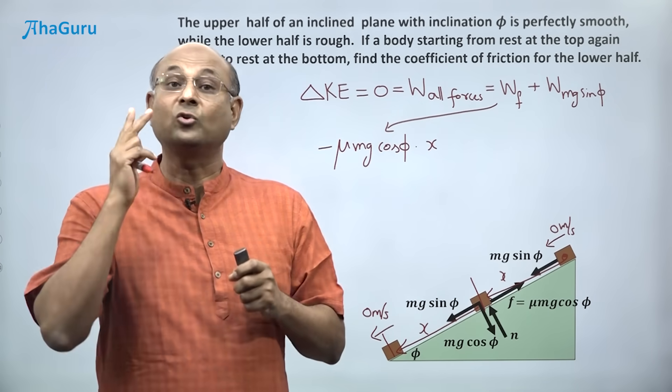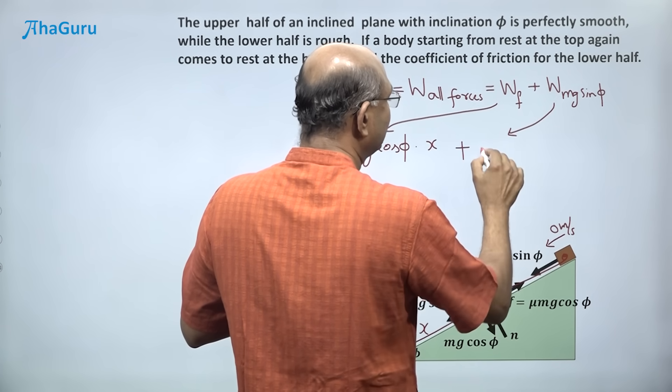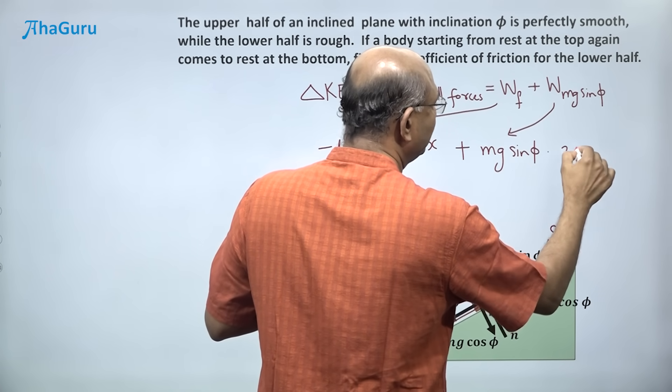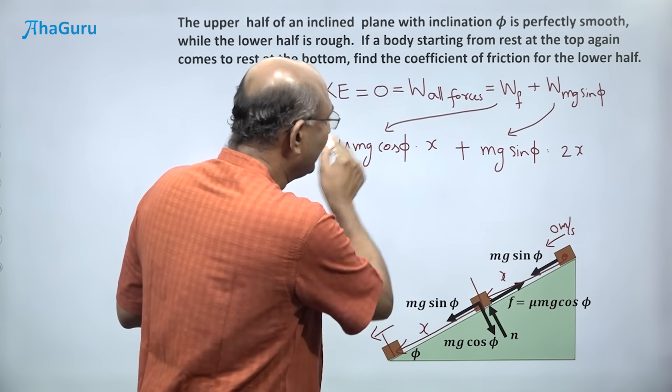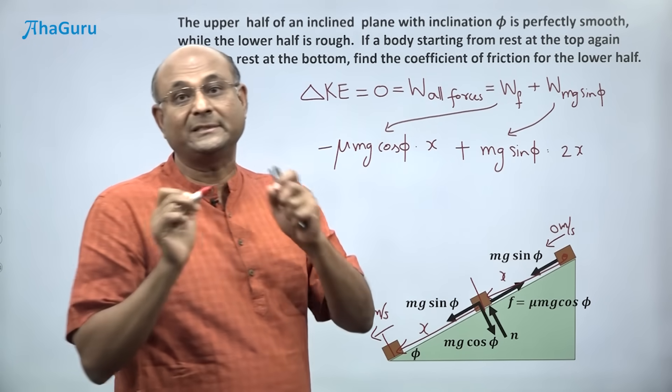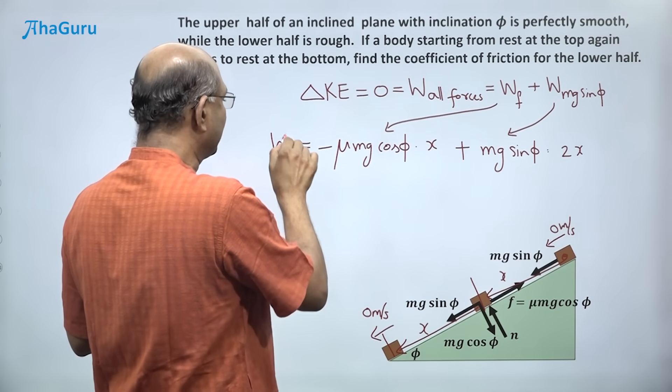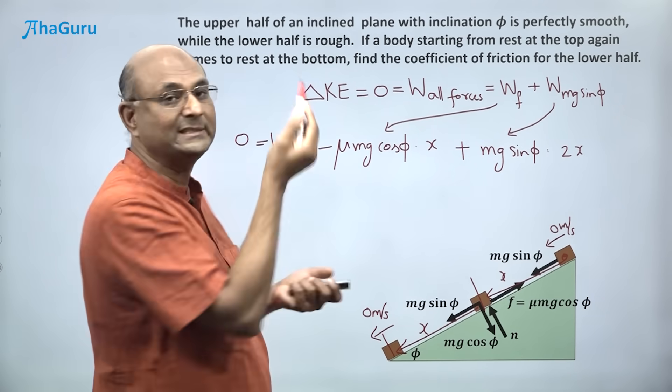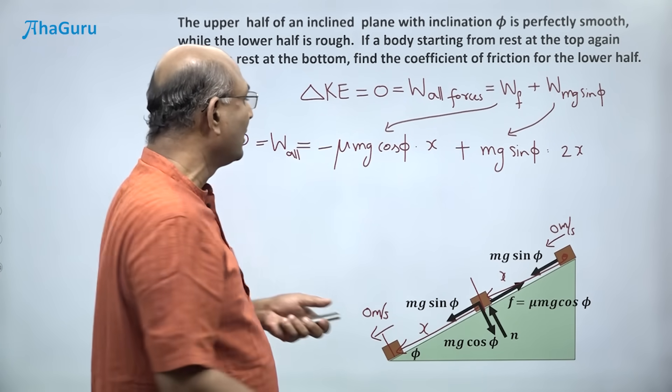What is the work done by mg sin phi? That is mg sin phi into 2 times x. So now this is the work done by friction, that is the work done by mg sin phi. The total work done by all forces is this, which of course we know is zero because the change in kinetic energy is zero. So that means this whole expression must be zero.